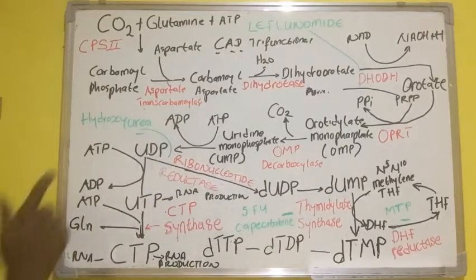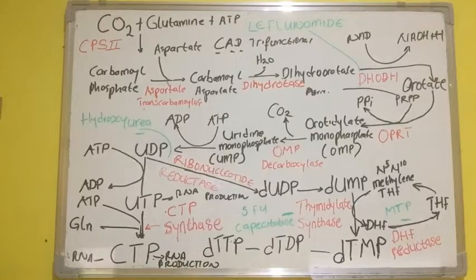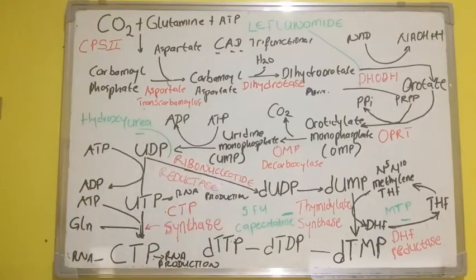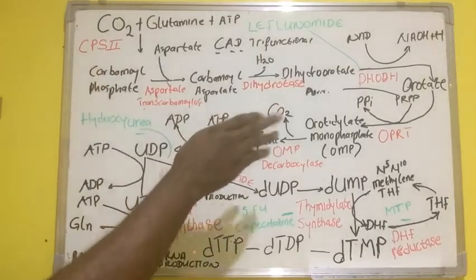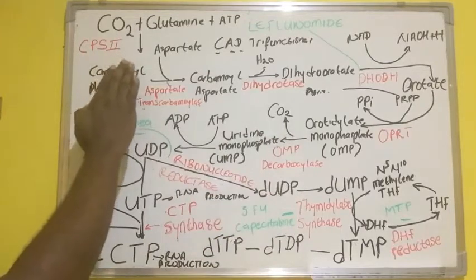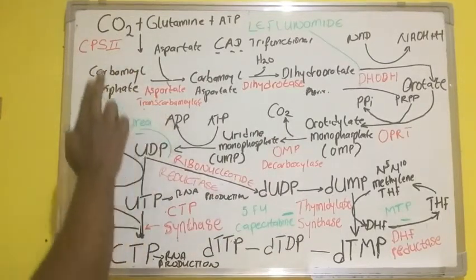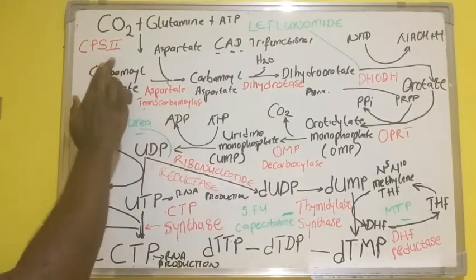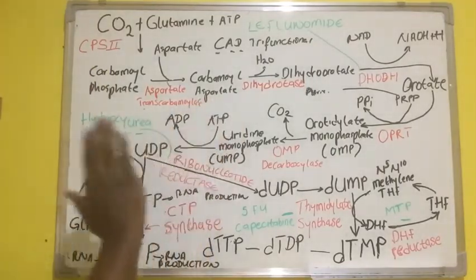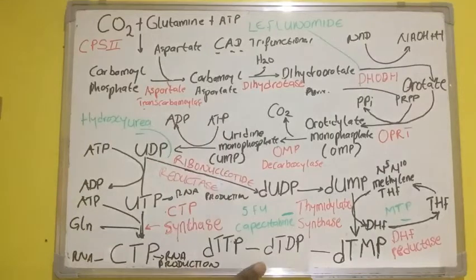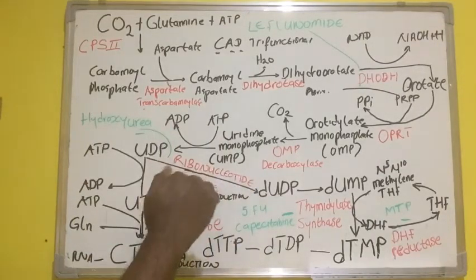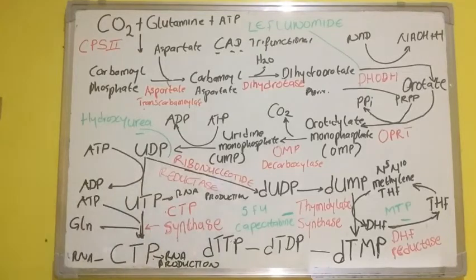Now, CPS2 — note that CPS1 is found in the urea cycle and is a mitochondrial enzyme — but this CPS2 is a cytosolic enzyme, meaning it is found in the cytosol. CPS1, found in the urea cycle, is found in the uttermost part of the inner mitochondria, making it a mitochondrial enzyme.